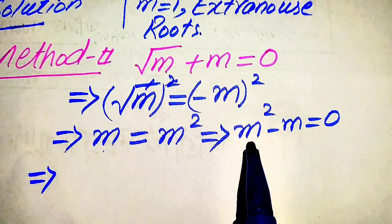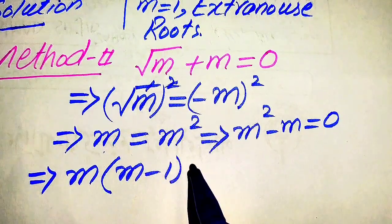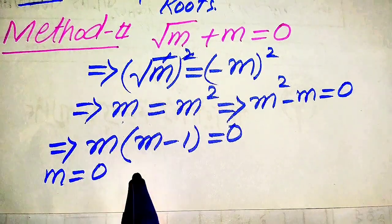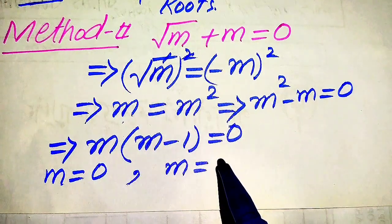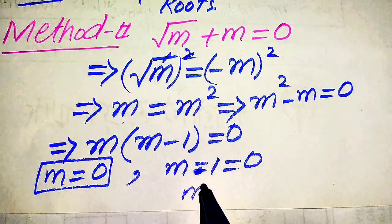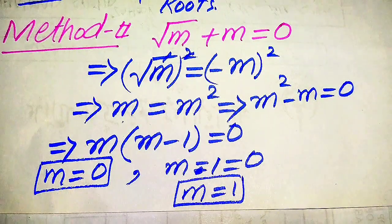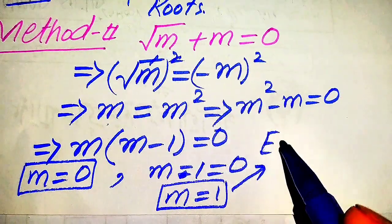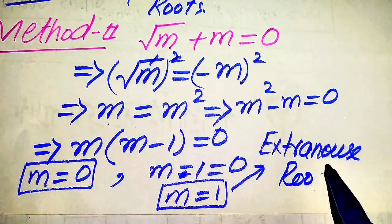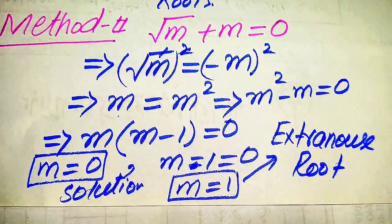Moving m to the right-hand side gives m squared minus m equals 0. Taking m as a common factor gives m times (m minus 1) equals 0. This splits into two cases: m equals 0 and m minus 1 equals 0, giving m equals 1. These are the same two roots found in method one. From the verification done in method one, m equals 1 is the extraneous root and m equals 0 is the solution.